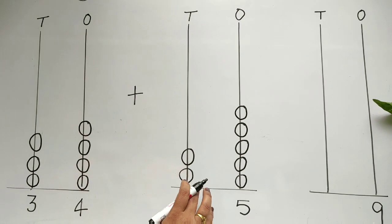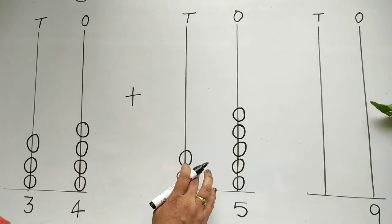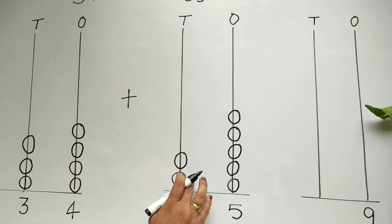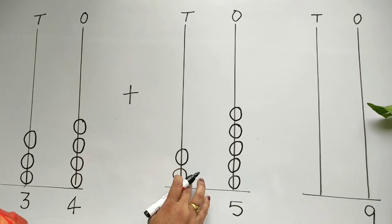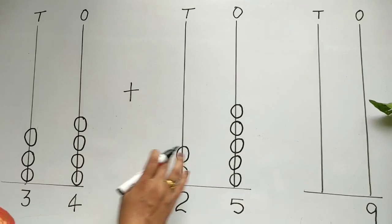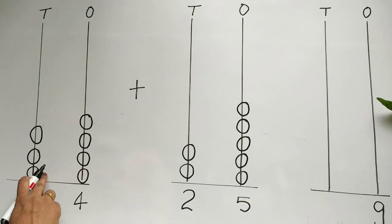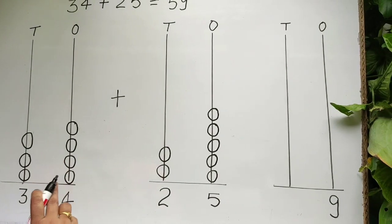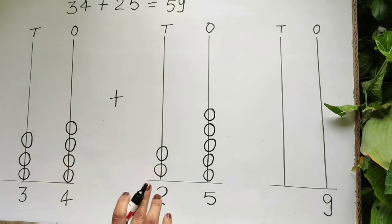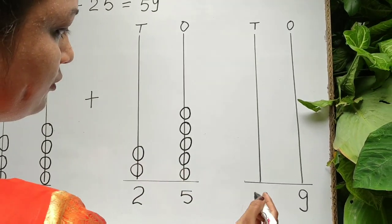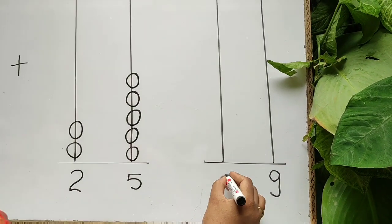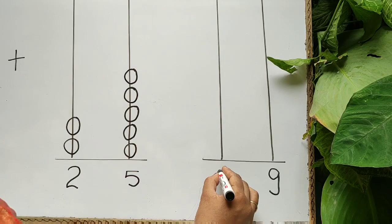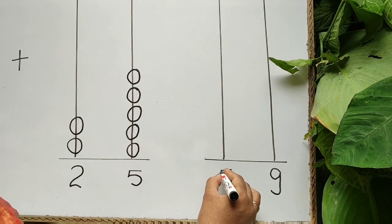And let's start to count the tens rod beads: one, two, three, four, five. These are 5 beads. So we will write under tens 5.